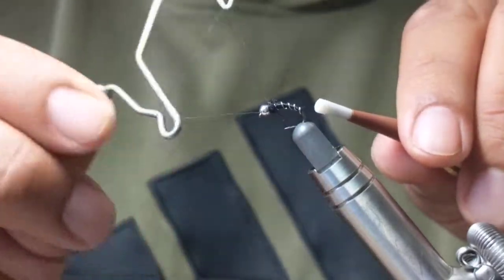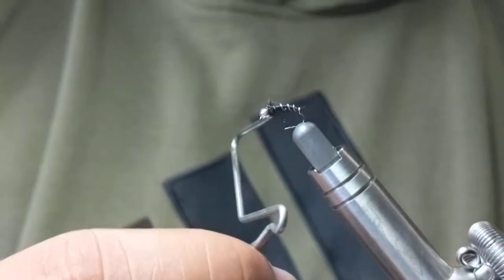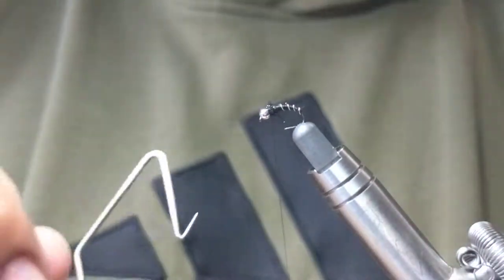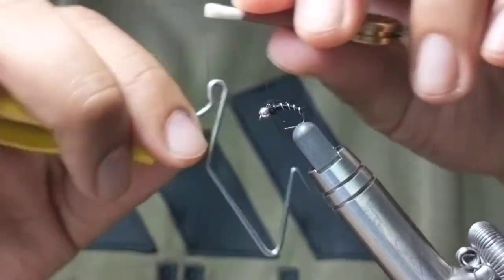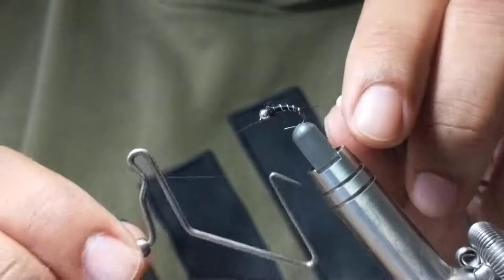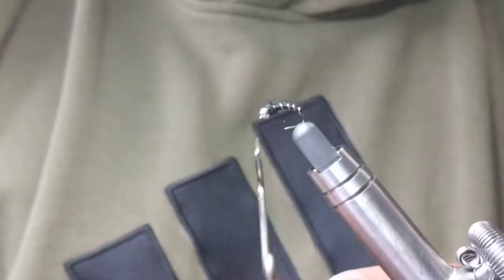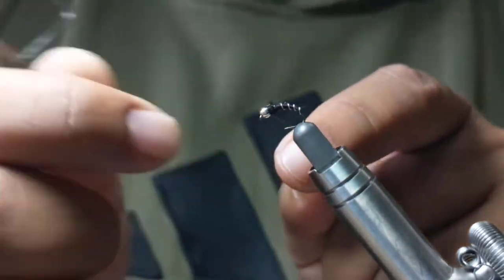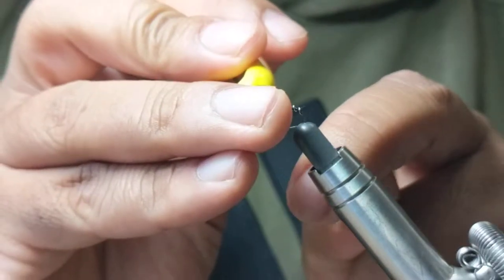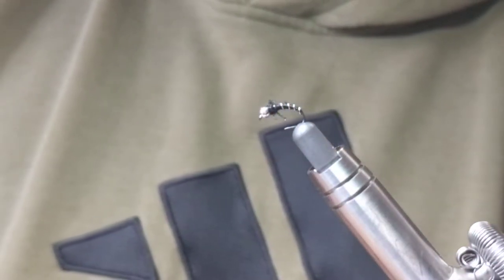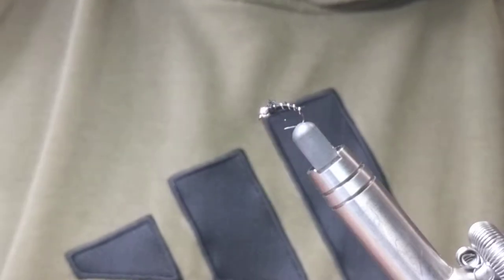I like to do two three-turn whip finishes, so that's one. I'll do another one, two, three. And that thing's ready to go. You can put head cement if you want—I traditionally don't with my zebra midges, but it never hurts.